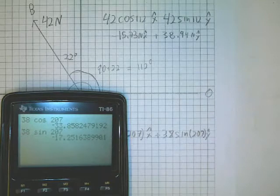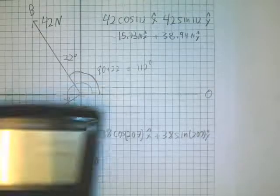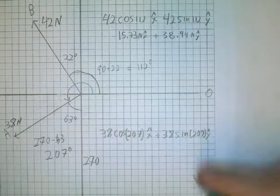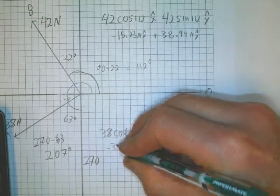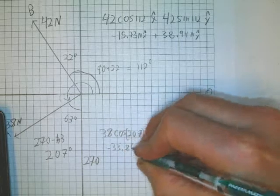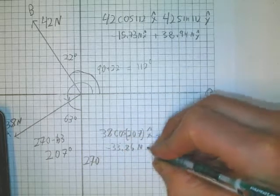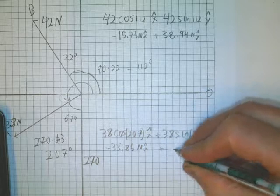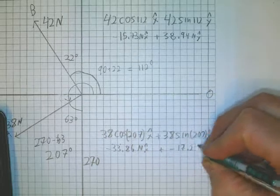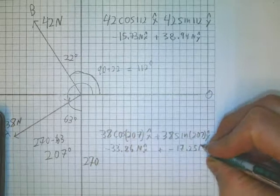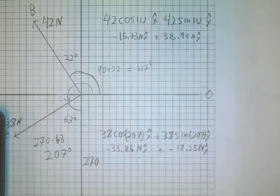Okay, and here we are. Both of these components are negative. And this makes sense because we're down here in quadrant three. So this ends up being negative 33.86 approximately newtons in the x direction plus negative 17.25 newtons in the y direction. There we go.